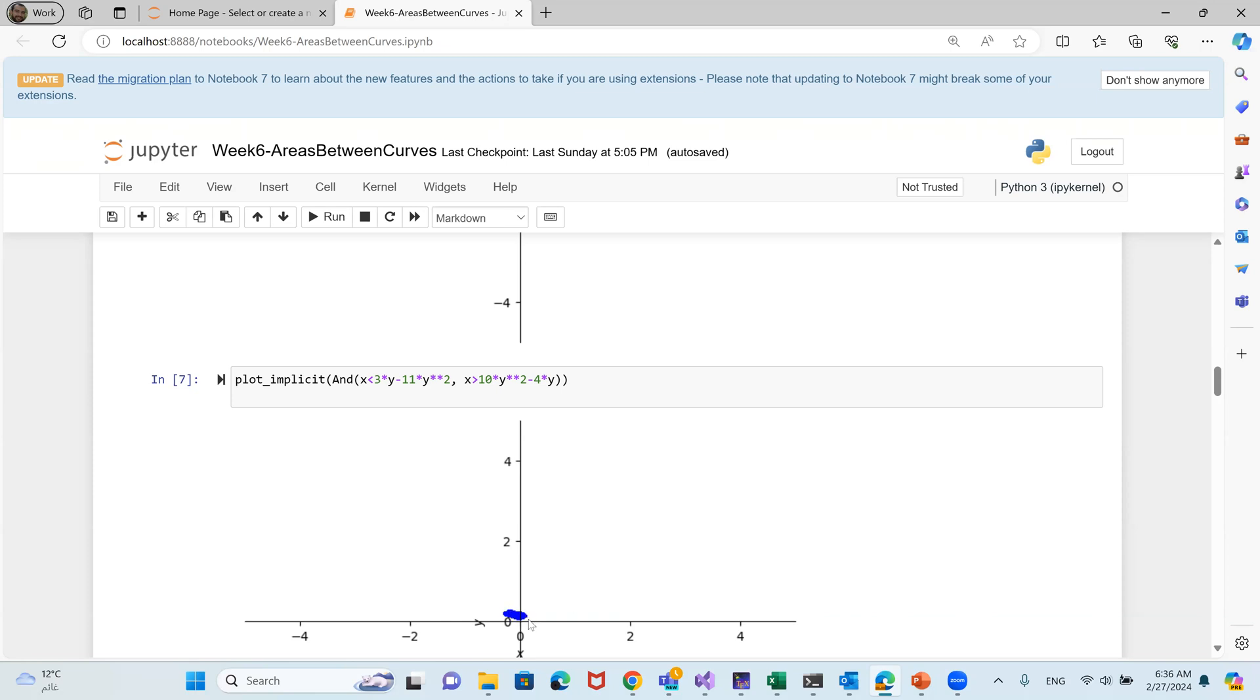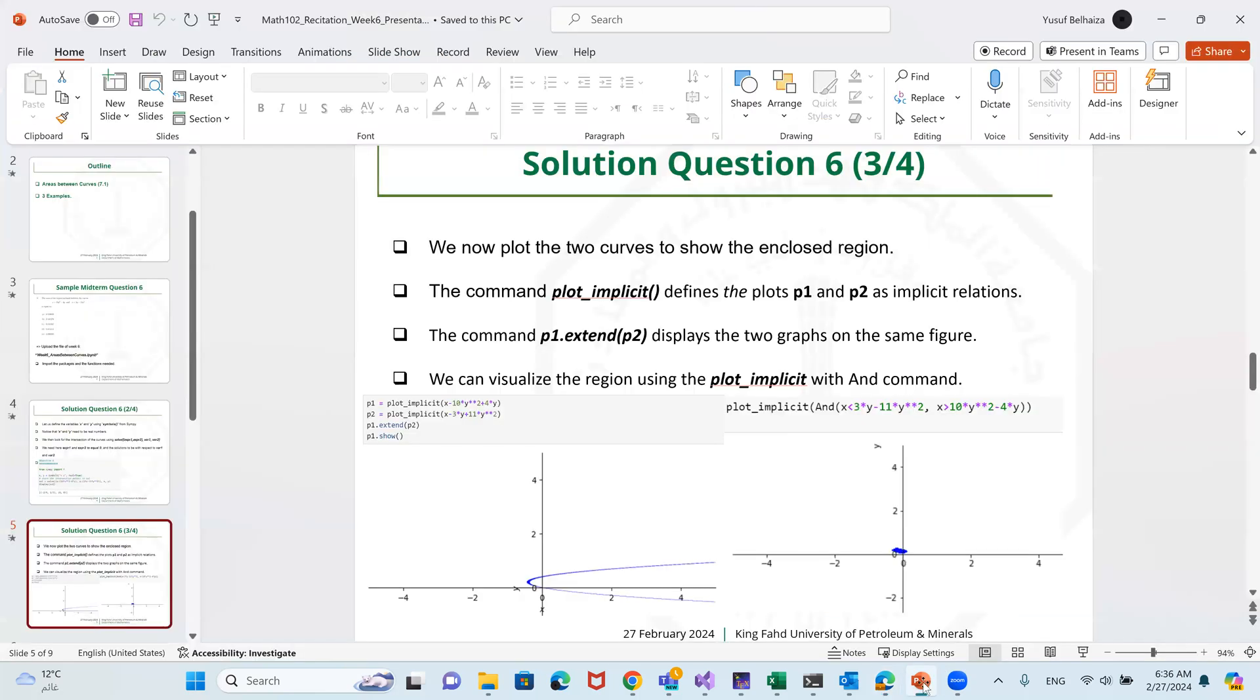Basically, this is the upper limit, which is 10y squared minus 4y, and this is the lower limit. This is the upper limit, which is 3y minus 11y squared, and on the left you have the lower limit, which is 10y squared minus 4y. Sorry for that. We'll move forward.